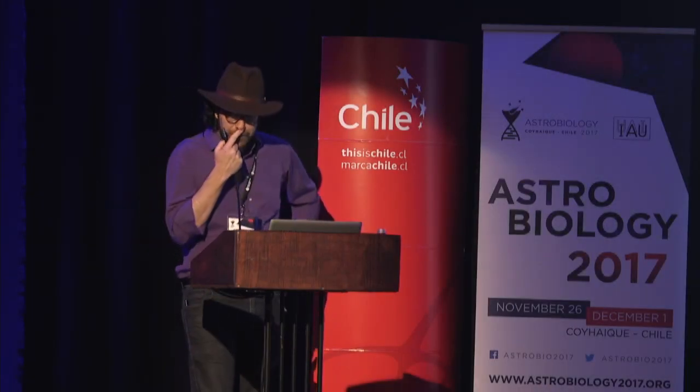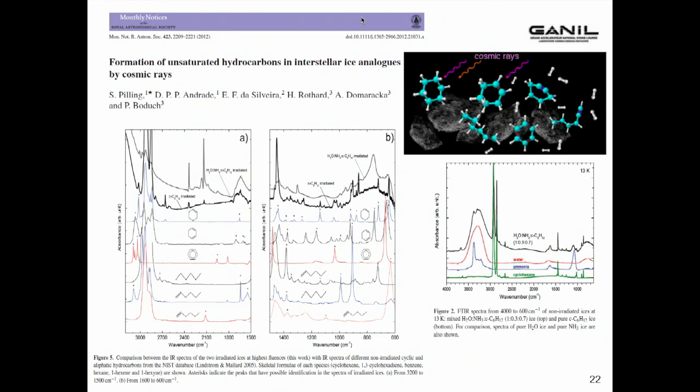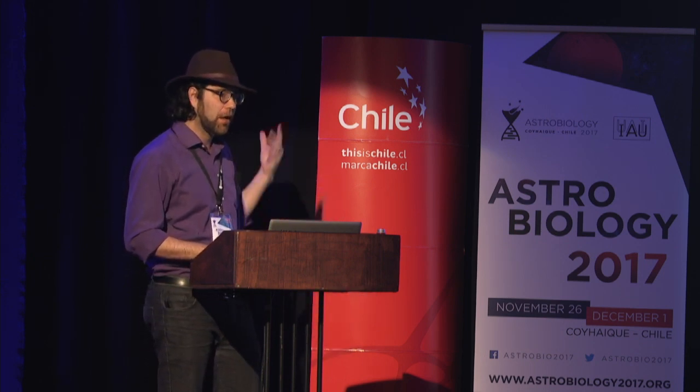Another interesting experiment we got is the formation of unsaturated hydrocarbons during cosmic ray bombardment. We start with a cyclohexane mixed ice and after some time we saw that we produce unsaturation in the molecules. We produce double bonds and triple bonds and we release molecular hydrogen to gas phase. This type of experiment shows us that cosmic rays induce the formation of double and triple bonds in molecules in space, enhancing the complexity of samples.